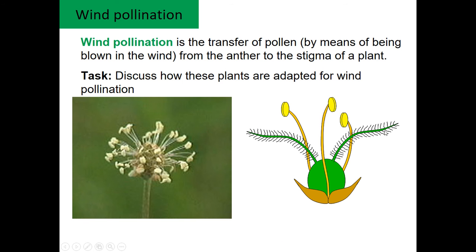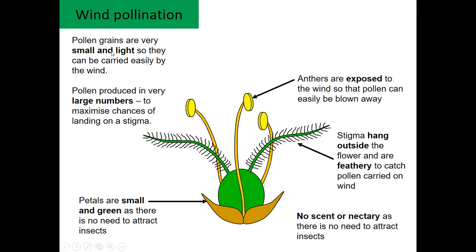Wind pollination looks quite different. Pause and try to work out why the two flowers look different. The reason is that pollen grains are small, light, and not sticky in wind pollination — the wind blows them off the anthers. Very large numbers of pollen grains are produced because there's not much chance of hitting the right flower. The stigmas hang outside in a feathery shape to catch as much pollen as possible. Petals are small because there's no need to attract insects — you just want hanging stigmas and anthers so the wind can carry the pollen. There's no scent or nectar, as there's no need to attract insects and no energy wasted making them.